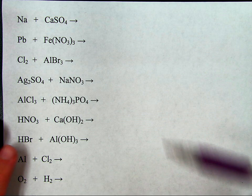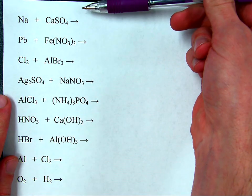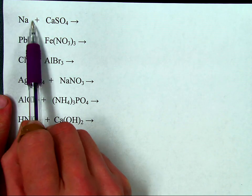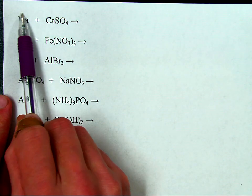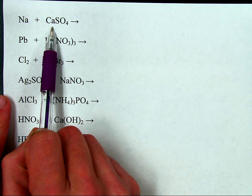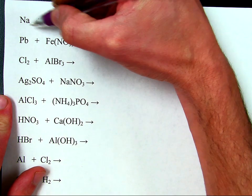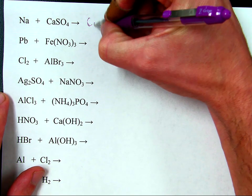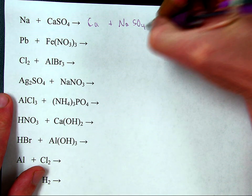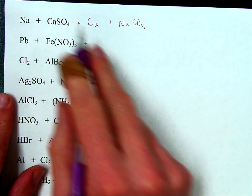First of all, let's look at single displacement reactions where you have an element plus a compound, which will produce an element plus a compound. So like replaces like, which means sodium — which as we can tell from the periodic table is a metal and therefore a positive ion — replaces the positive portion of this molecule, which in this case is the calcium. So we should get sodium paired with sulfate, and calcium by itself.